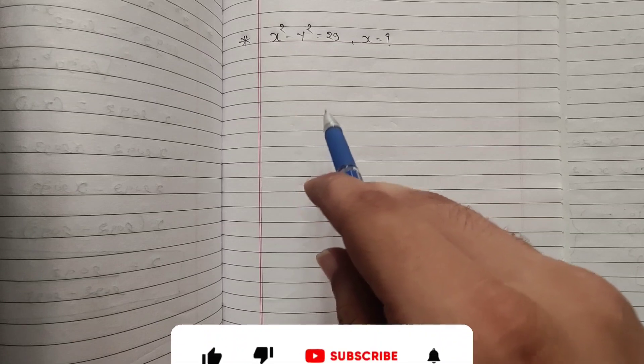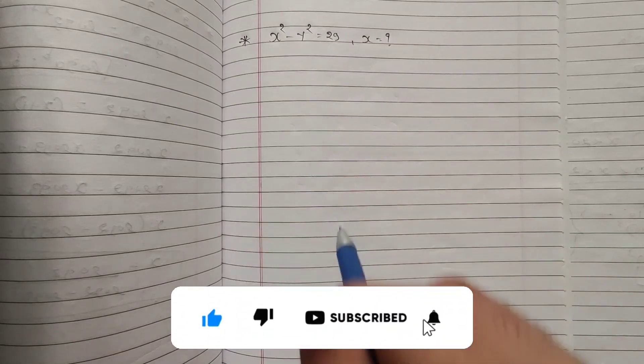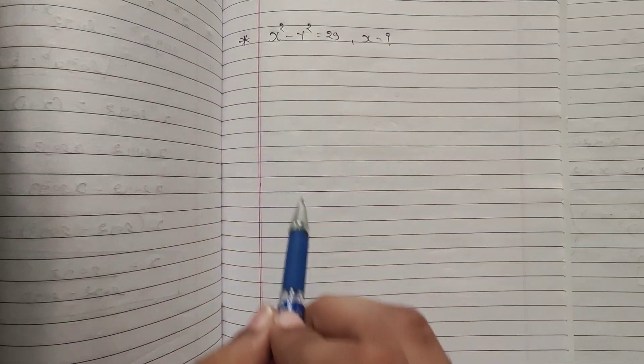This is very amazing question, very short question but very conceptual question. So pay attention throughout the video. Now, first of all x square minus y square equal to 29.